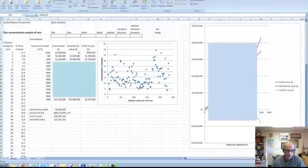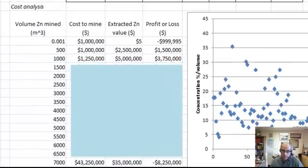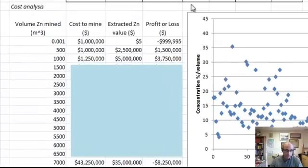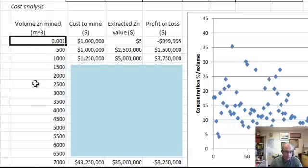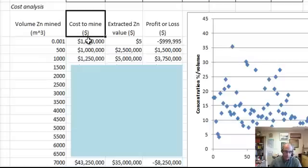I want to give an updated explanation of how to do the simple cost-benefit analysis. What we want to do is set up something here where we have volume of zinc mined, and it's going to be something above zero and then increasing up to, let's say, 7,000 cubic meters. There's a cost to mine. Here we're basically saying anything less than 500 cubic meters costs a million dollars. The instant you start digging, you just got to get all your equipment there.